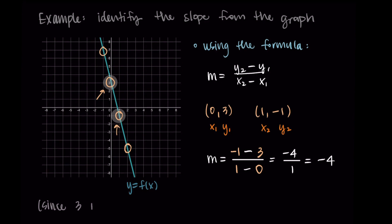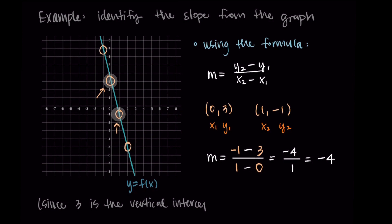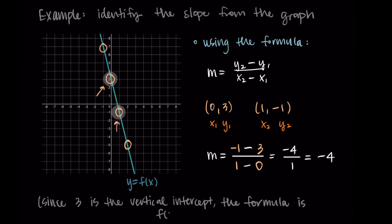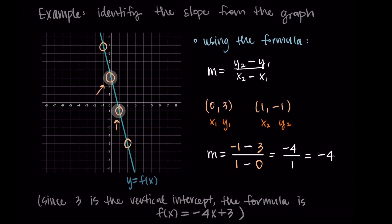As we wrap up this example, the vertical intercept is 3 — that's where the line intersects the vertical axis — so the formula would be f(x) equals negative 4x plus 3, where negative 4 is our slope and 3 is the vertical intercept. That is our introduction to slope. Thanks so much for watching, and I will talk to you in the next one.